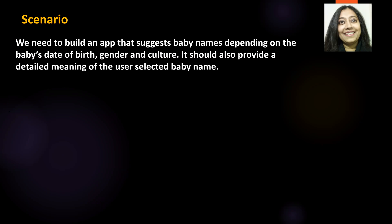The scenario for our lab today: we need to build an app that suggests baby names depending on the baby's date of birth, gender, and culture. In addition to that, this app should also provide a detailed meaning of the user-selected baby name. The app needs to suggest baby names depending on the baby's date of birth, gender, and culture, and provide the detailed meaning of whatever baby name the user selects.